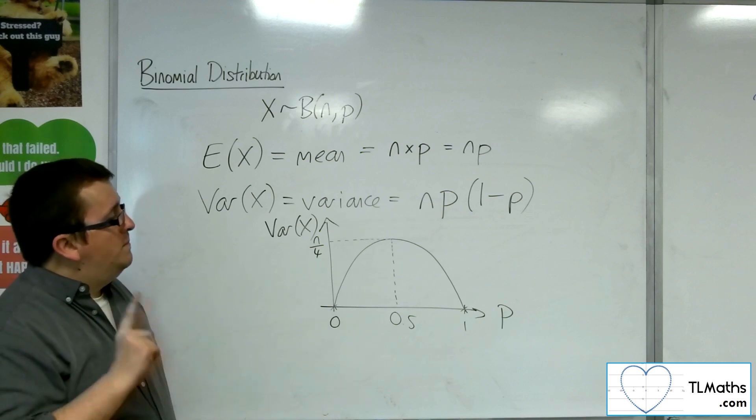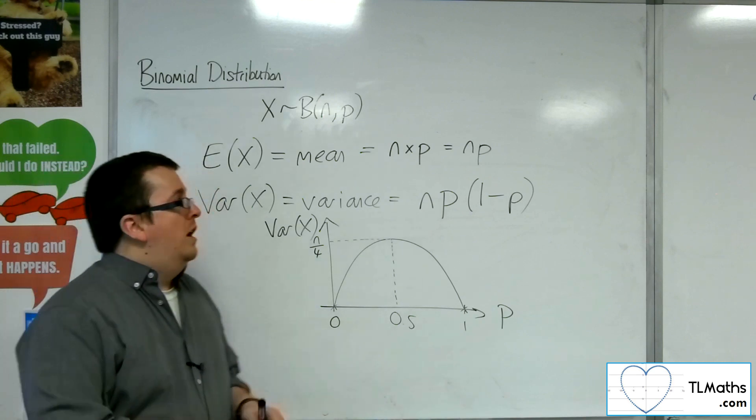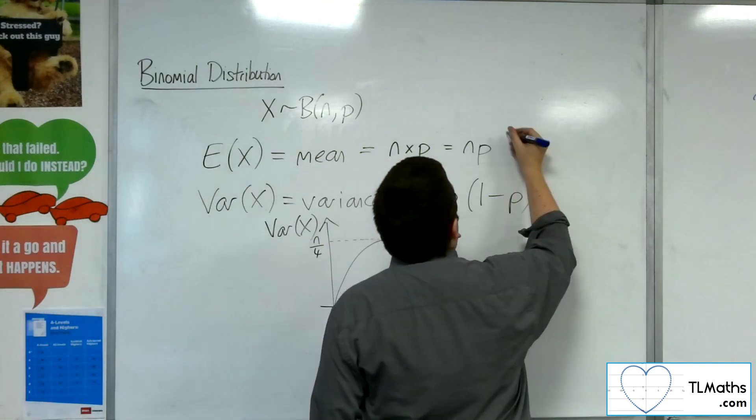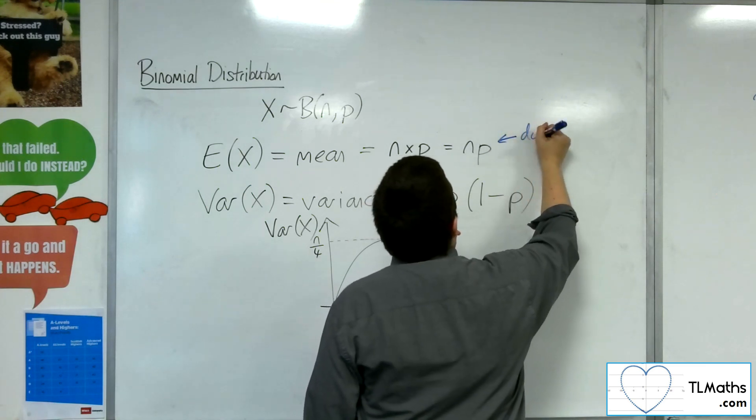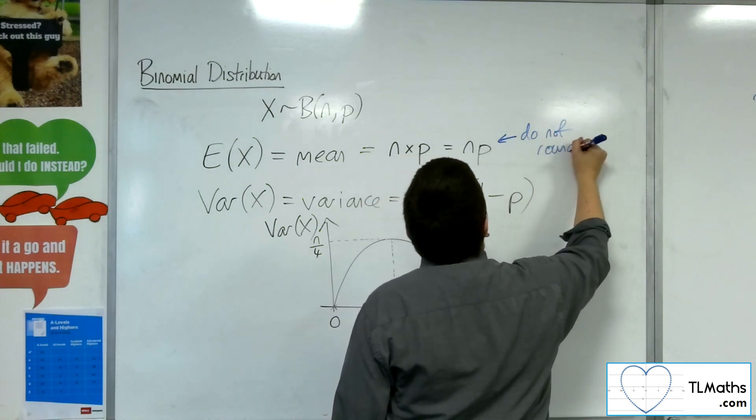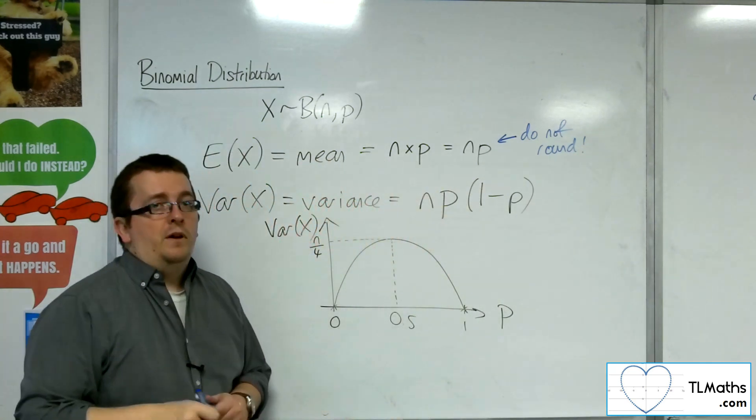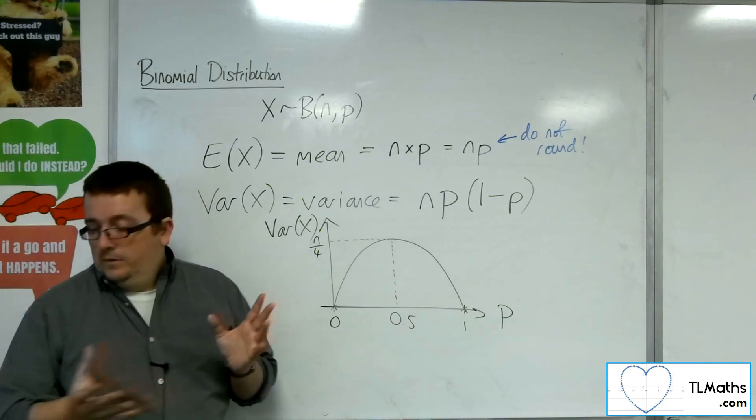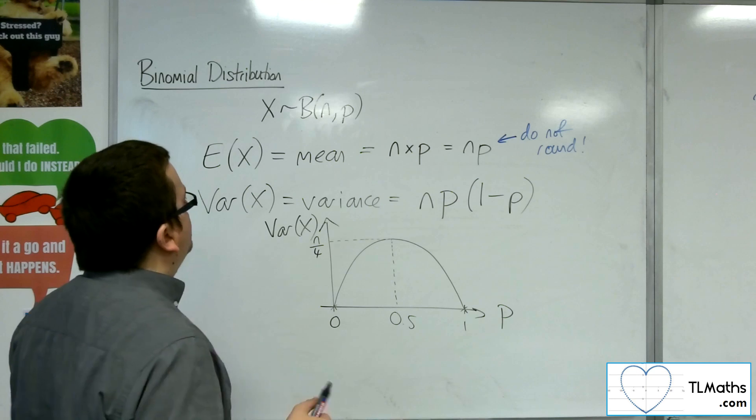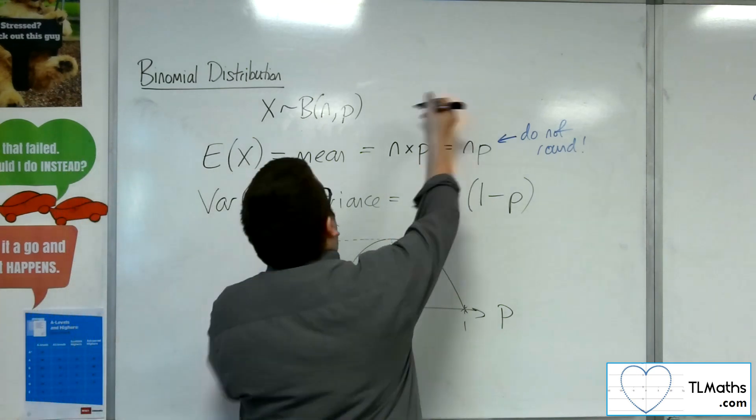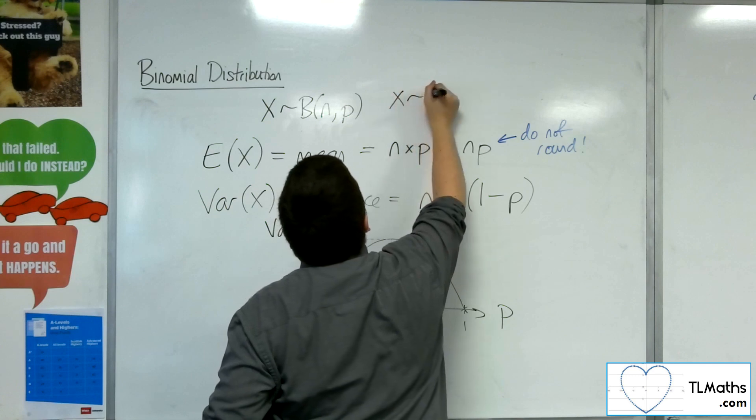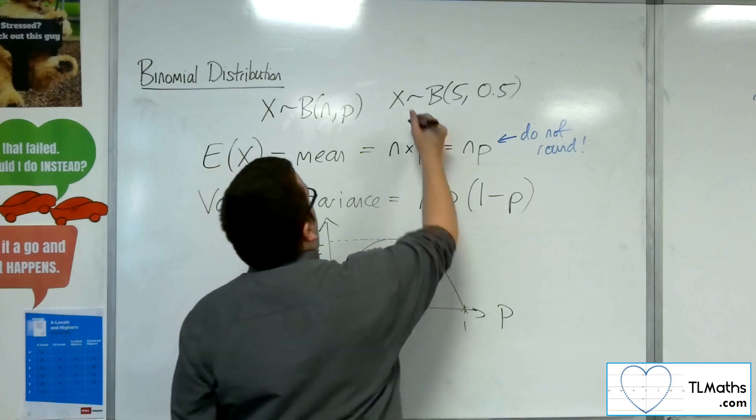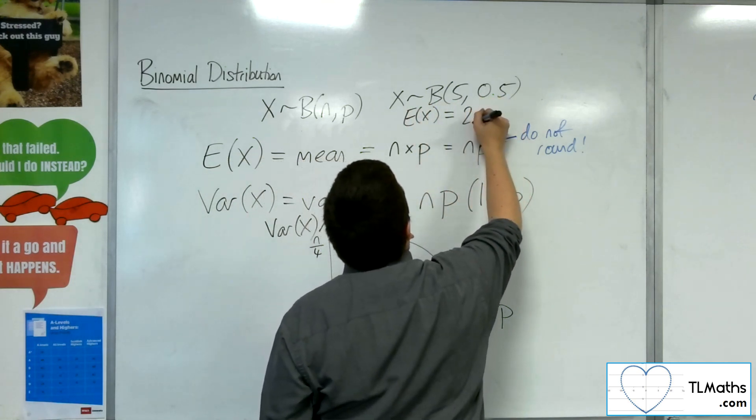One other thing that I would mention and make sure you know is that the expected value that you get here is never rounded. It doesn't matter what the context is, do not round that number, the n times p. So if you found for a certain game, let's say we've got n as 5 and probability is 0.5, then the expected value is 5 times 0.5, so 2.5.